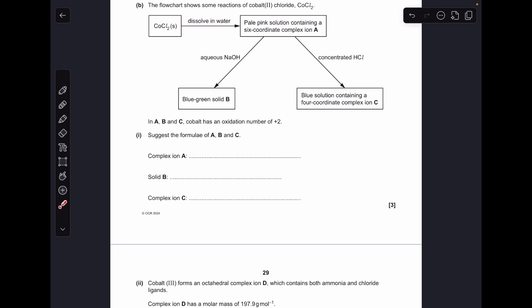Moving on to part B, this flow chart about the reactions of cobalt(II) chloride. When you dissolve that in water, we've got the information here: pale pink solution containing a six-coordinate complex ion. So that's going to be the hexa-aqua ion, which means we've got [Co(H₂O)₆]²⁺ all in square brackets.